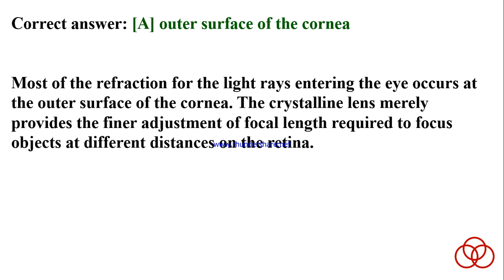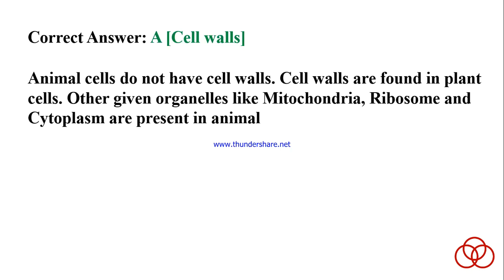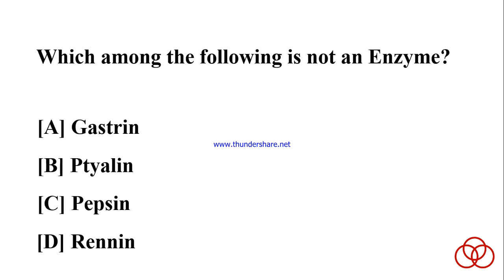Which of the following is not present in animal cells? A) Cell walls. B) Mitochondria. C) Ribosomes. D) Cytoplasm. Correct answer: A. Cell walls. Animal cells do not have cell walls; cell walls are found in plant cells. Other organelles like mitochondria, ribosomes, and cytoplasm are present in animal cells.